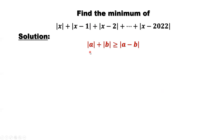Absolute value of a plus absolute value of b is greater than or equal to absolute value of a minus b. It is not difficult to derive this result. Here is the basic idea.